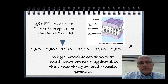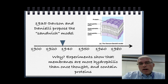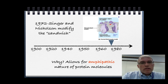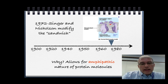In 1935, two scientists, Davison and Daniele, proposed a model incorporating proteins into the bilayer. Experimental evidence showed that cell membranes were more hydrophilic than a pure phospholipid bilayer would explain, so they realized proteins are also part of the membrane. Then around 1972, Singer and Nicholson modified the older sandwich model to incorporate proteins that actually float or sink into the phospholipid bilayer, bobbing around like corks in a swimming pool.